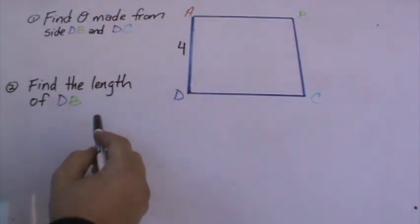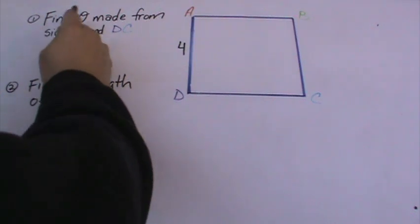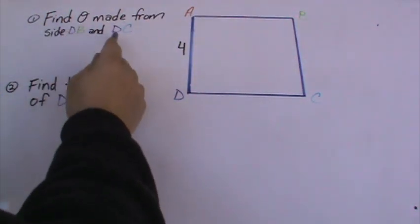The next problem is a two-part question. The first question is asking, find theta made from side DB and DC.